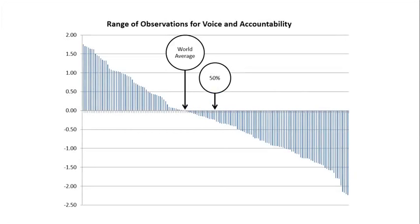The index is expressed in a range from minus 2.5 to plus 2.5, the best performances being positive, the worst negative. Zero represents the world average for 2012. Data is available for all 152 countries, so the deciles are all 15, except the first two, which are 16 each.